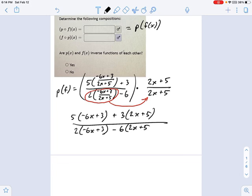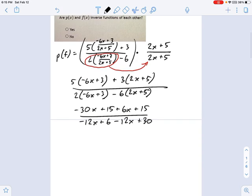This isn't so bad. I can simplify this by just breaking open those parentheses. 5 times negative 6 is negative 30 plus 15 plus 6x plus another 15, divided by negative 12x plus 6 minus 12 more x plus 30. Now we do a little more simplification. See if I get something that's just x. Negative 30 plus 6 is going to be negative 24x plus 30 on the top, and on the bottom I have negative 24x plus 36.